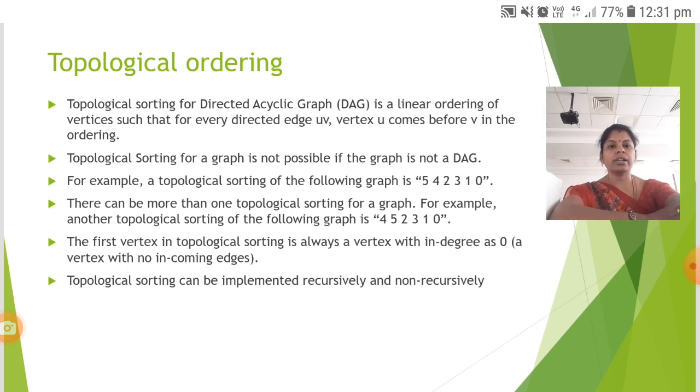Topological sorting for a graph is not possible if the graph is not a DAG. For example, a topological sorting of the following graph is 5, 4, 2, 3, 1, 0.